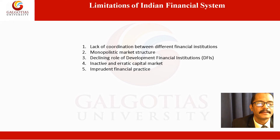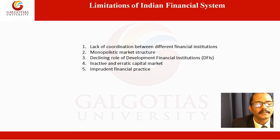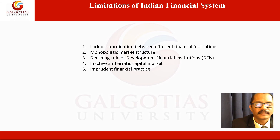The third limitation is the declining role of development financial institutions (DFIs) in India. Since independence, DFIs played a very important role in the development of industries by providing direct finance to industries and greenfield projects. But since liberalization, as universal banking came into the picture and many DFIs were converted into universal banks, the role of development financial institutions in India is declining. Because of this, many greenfield projects are still finding themselves short of capital.